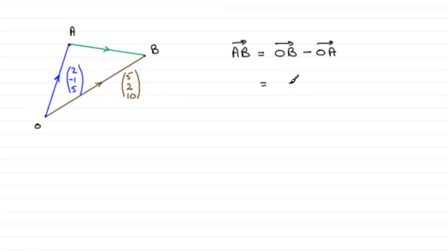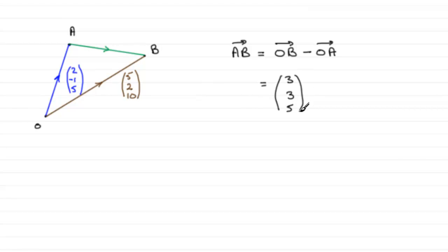All we need to do is subtract our vectors: 5 minus 2 is 3, then 2 minus minus 1 is also 3, and then 10 minus 5 which is 5. You can leave it as a column vector or write it as 3i plus 3j plus 5k — totally up to you.